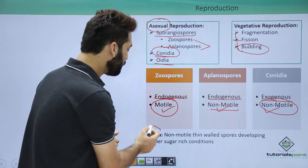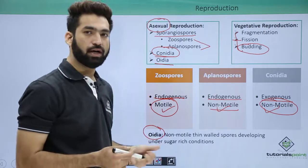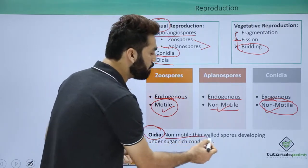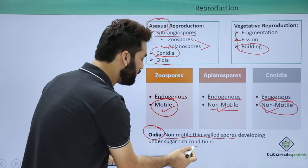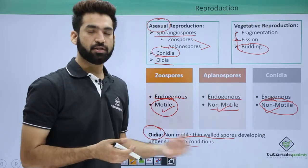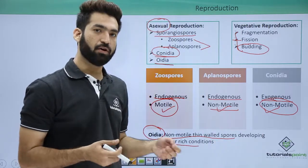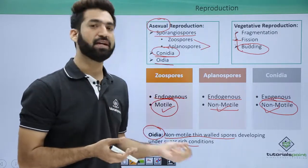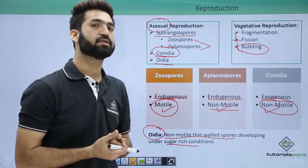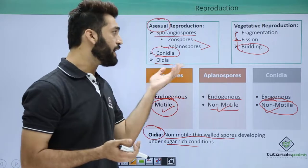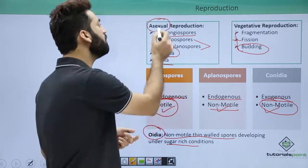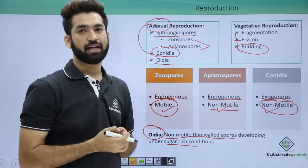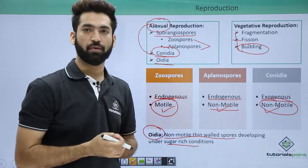The third type of spore in fungus is called oidia. Oidia are non-motile, thin-walled spores that develop under sugar-rich conditions. The fungus forms this spore when it gets sugar-rich conditions. This stage is especially called the torula stage. In the next session, we'll detail the different asexual methods in fungus and the concept of spores.